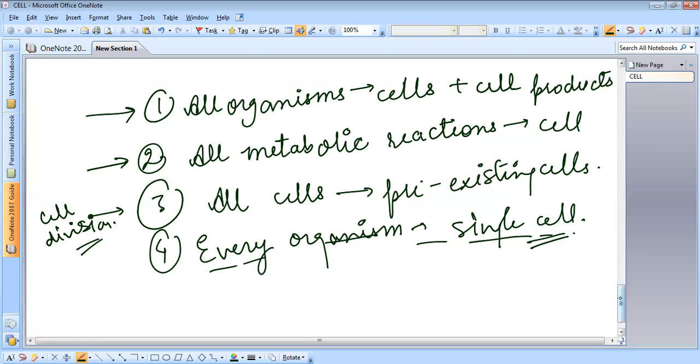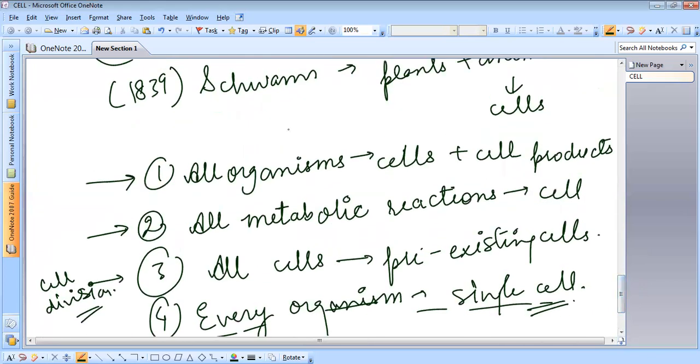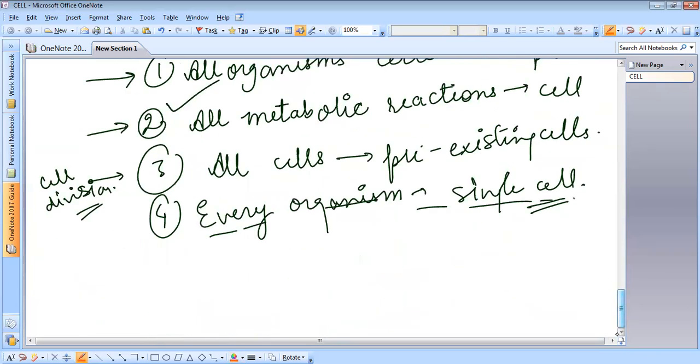So, now, this was the cell theory. Schleiden and Schwann proposed this basic theory, which was further improvised by Virchow, presenting the idea that all cells arise from pre-existing cells. We come up with all organisms are made of cell and cell products. All metabolic reactions take place inside the cells. All cells come from pre-existing cells and every organism starts their life as a single cell.